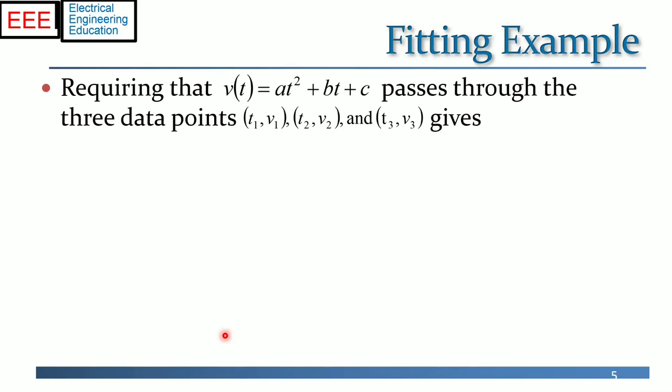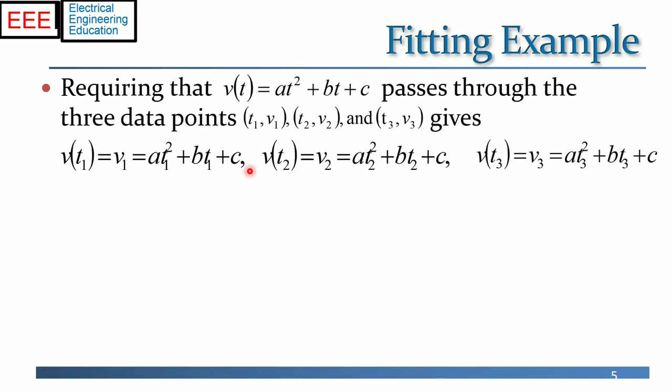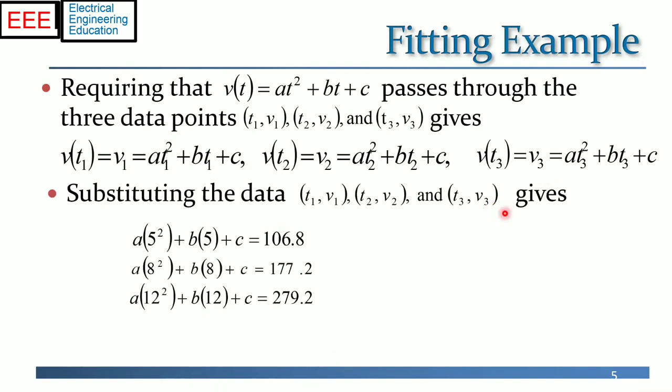Requiring that v of t equals A t square plus B t plus c passes through the three data points v1 at t1, v2 at t2, and v3 at t3, we have v of t1 equals A t1 square plus B t1 plus C, and similarly for the other two data points as shown. Substituting the three data points values from the table gives the three equations on the left, and simplifying gives the three equations on the right.